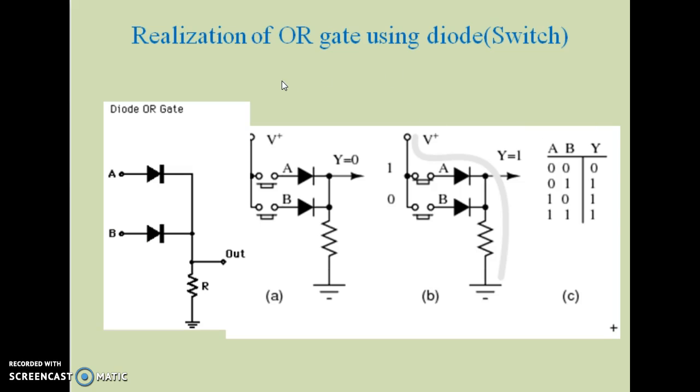We can also see realization of OR gate using diode as a switch. In this diode OR gate, A and B inputs are provided through the anodes of the diode and both cathodes are shorted together through which output is taken, and cathodes are connected to ground through the resistor. Here also two conditions are shown.